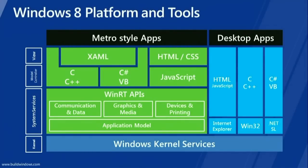WinRT provides over 1,800 different objects for you to use to build your applications. There's an application model that supports low power, full-screen immersive applications, and this modern way of building software. There are communication and data objects, graphics and media, devices and printing — all natively built into Windows. This is not a layer on top of Windows. This is Windows. It's all native code built to reflect in different languages.